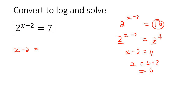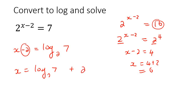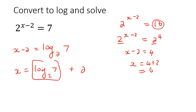So you take the exponent, make it equal to log of the base, and then the other number. To get x by itself, you'd get log base 2 of 7, plus 2, because you brought that 2 over. Remember that log base 2 of 7 is one part, and the plus 2 is by itself — don't add the 7 and the 2 together on the calculator. If you type that in, you should get 4.81 to two decimal places.